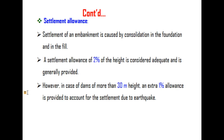Settlement allowance. Settlement of an embankment is caused by consolidation in the foundation and in the fill. A settlement allowance of 2% of height is considered adequate and is generally provided. However, in case of dams more than 30m in height, an extra 1% allowance is provided to account for settlement due to earthquake, making it 3% total settlement allowance.